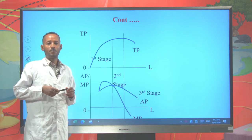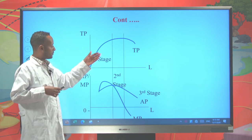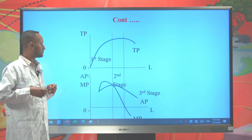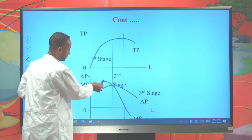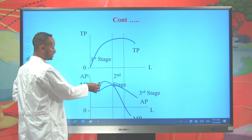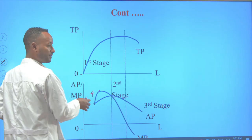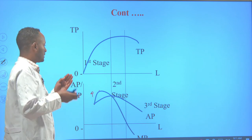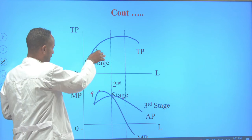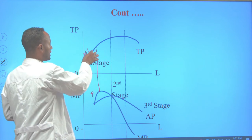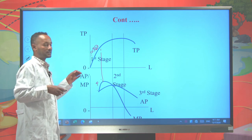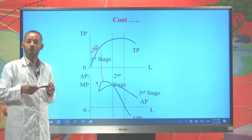From this curve we can point out some relationships between total product and marginal product, and between average product and marginal product. When the marginal product curve is increasing, the additional output from additional employment of labor is increasing. Hence, whenever marginal product increases, the total product curve is increasing at an increasing rate — this is the first relationship between total product and marginal product.